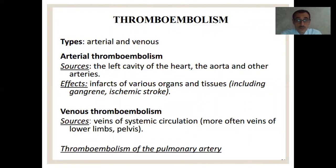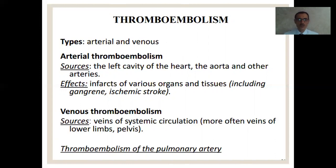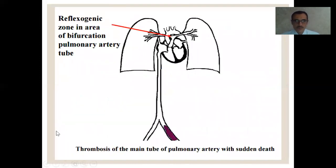There are two types of thromboembolism: arterial and venous. Arterial thromboembolism: the source is the left cavity of the heart, aorta, and other arteries. Effects include infarction of various organs and tissues including gangrene and ischemic stroke. Venous thromboembolism: the source is the veins of systemic circulation — most often veins of the lower limbs and pelvis — and results in thromboembolism of the pulmonary artery. Here we see the thromboembolism of the pulmonary artery — there is a reflexogenic zone in the area of bifurcation of the pulmonary artery. During thrombosis, this reflexogenic area is stimulated, resulting in sudden death.